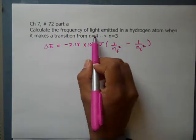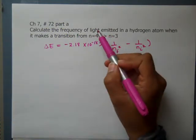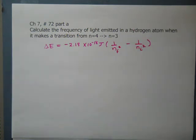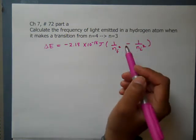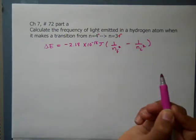You know to use this formula because you see a change in n and it's asking for the frequency of light emitted. We realize n=3 is our final and n=4 is our initial.